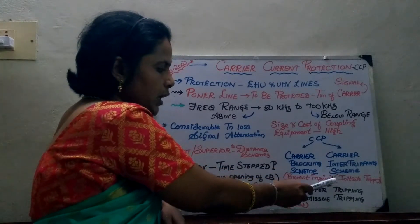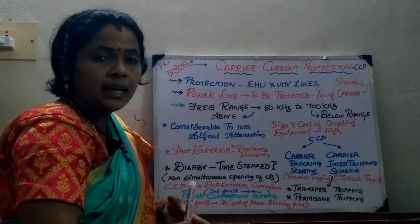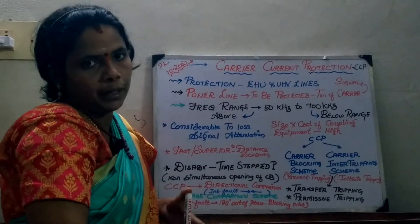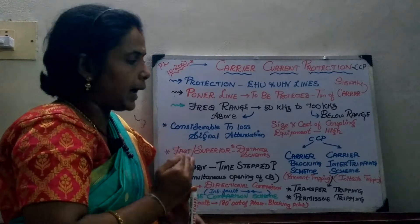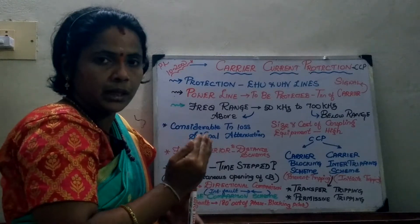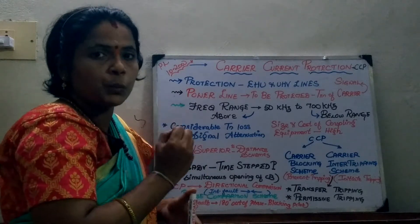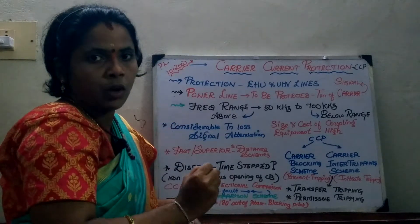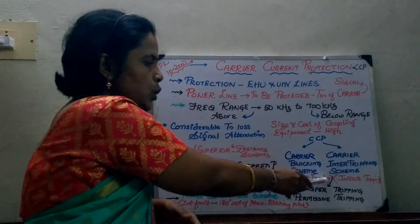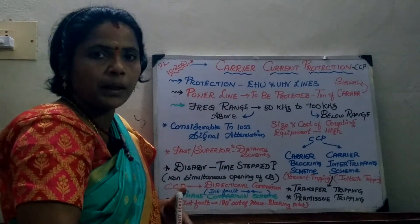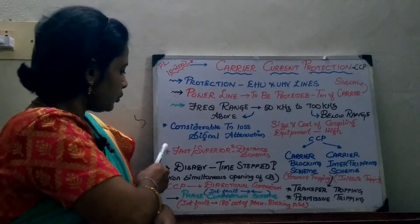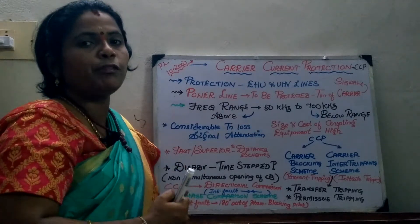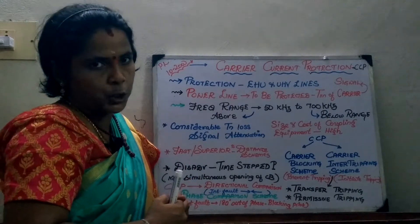The carrier inter-tripping scheme is also known by the names transfer tripping and permissive tripping. From the name itself, it is clear that if it initiates the tripping of the relay it is called the carrier inter-tripping scheme. Moving on to the advantages — the reason why we go in for carrier current protection — this proves to be a fast and superior method when compared to the distance schemes.